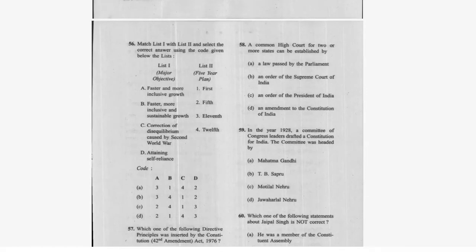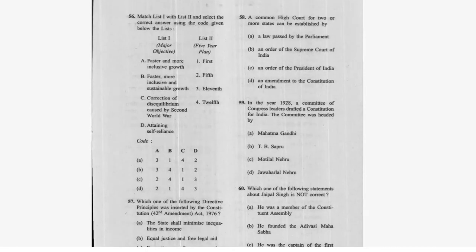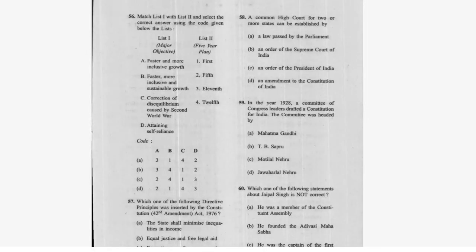Question 56: Match List 1 with List 2 — 'faster and more inclusive growth' needs to be matched. Attaining self-reliance was the first Five Year Plan's aim. Option B will be correct here.